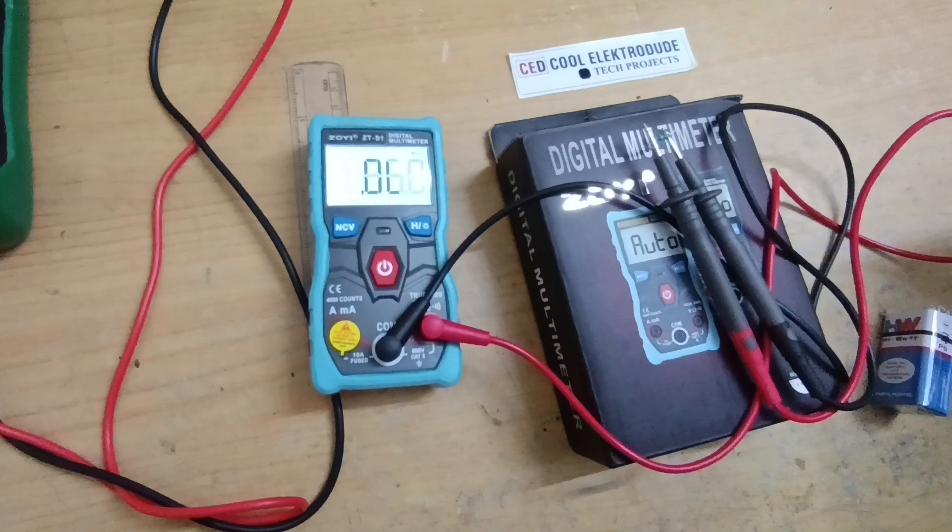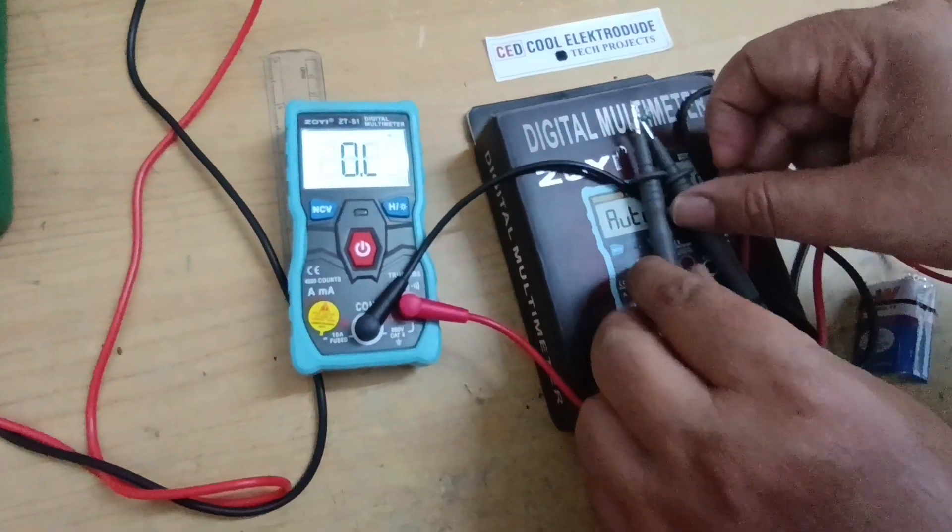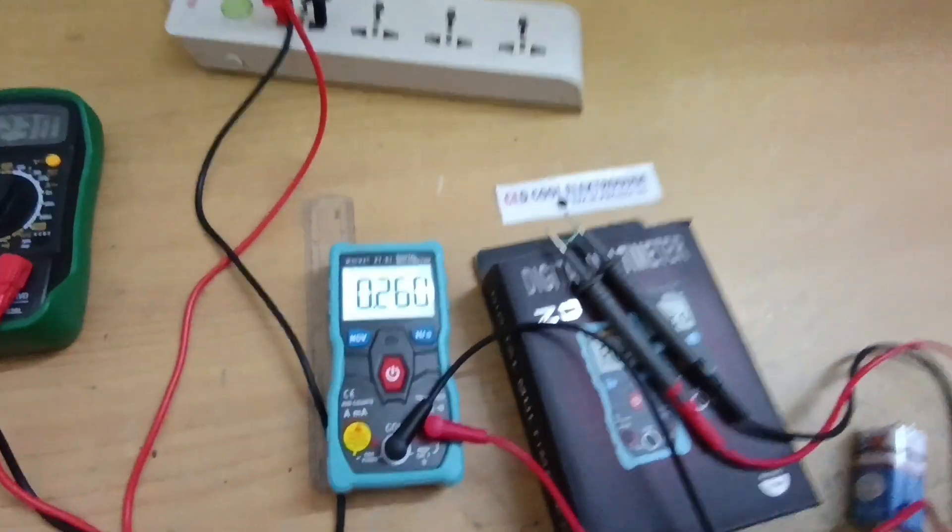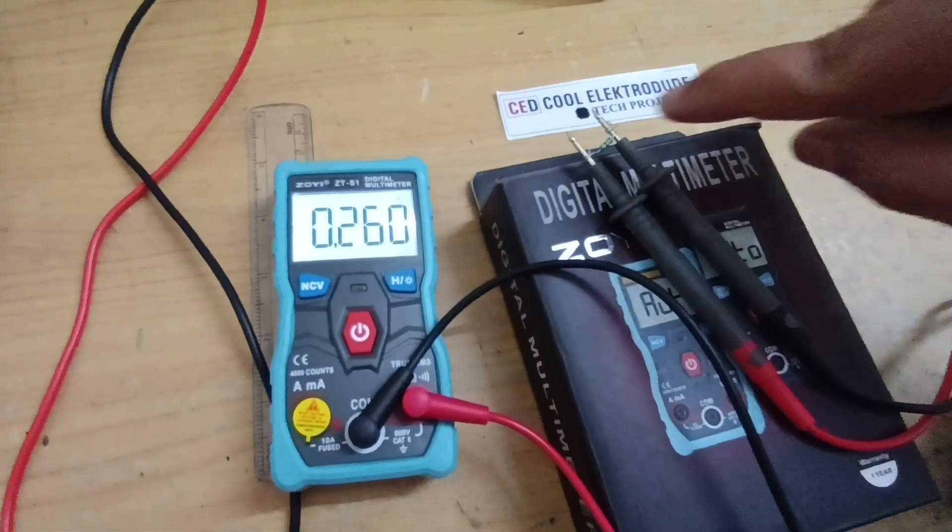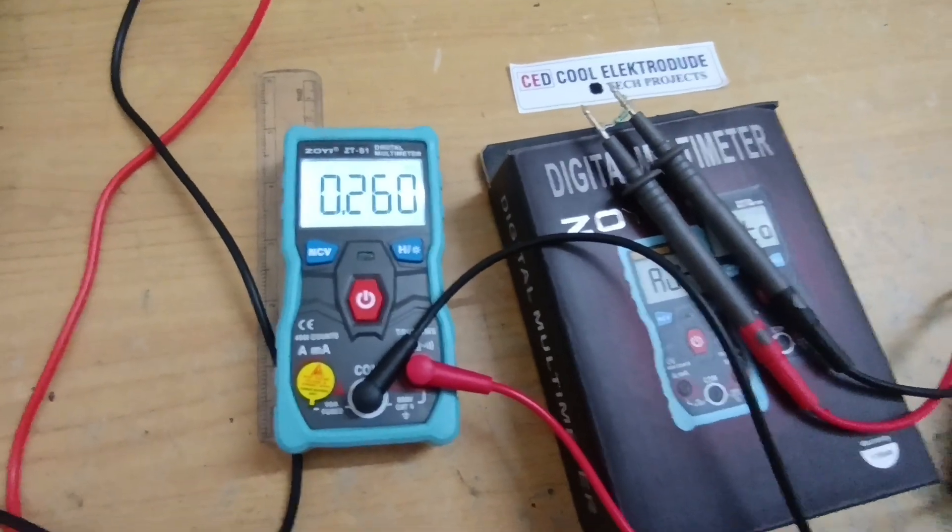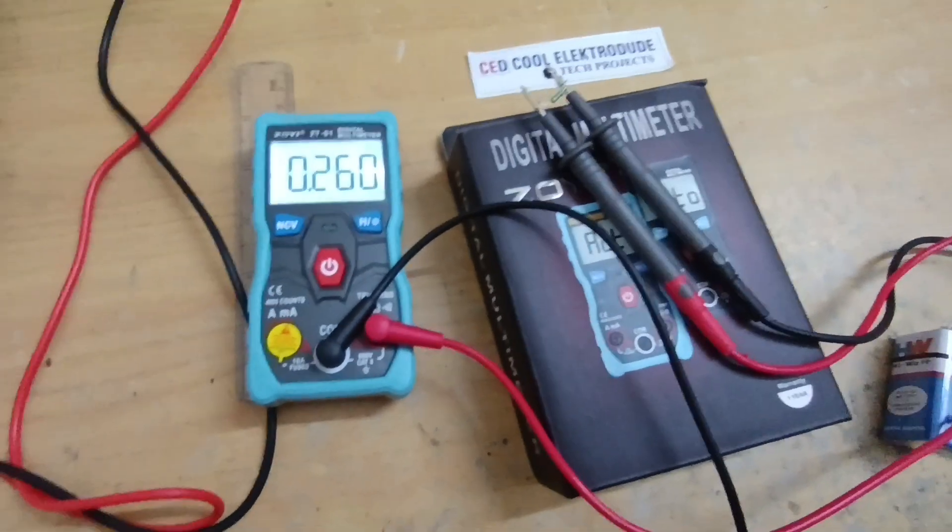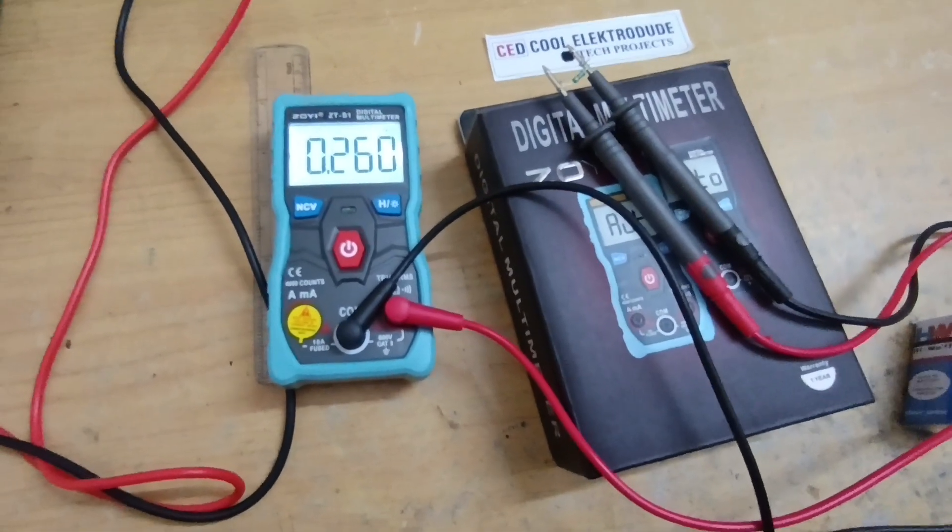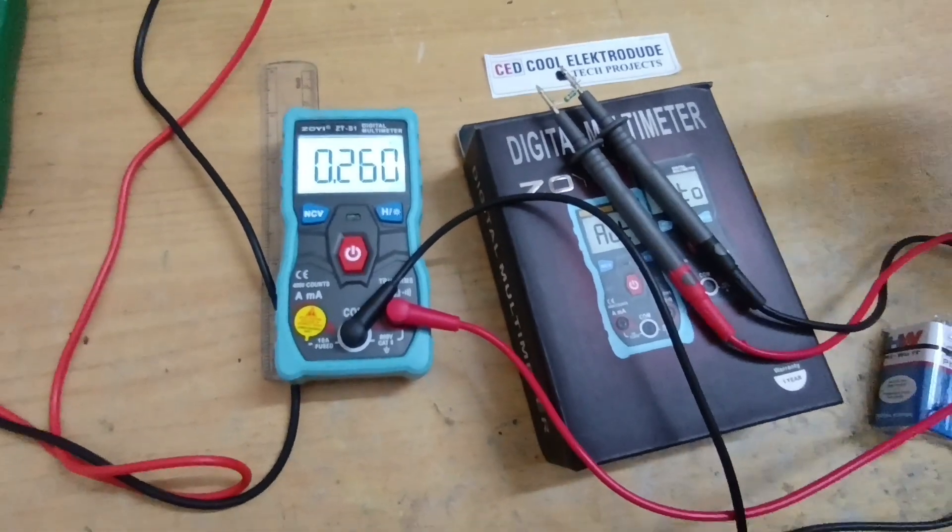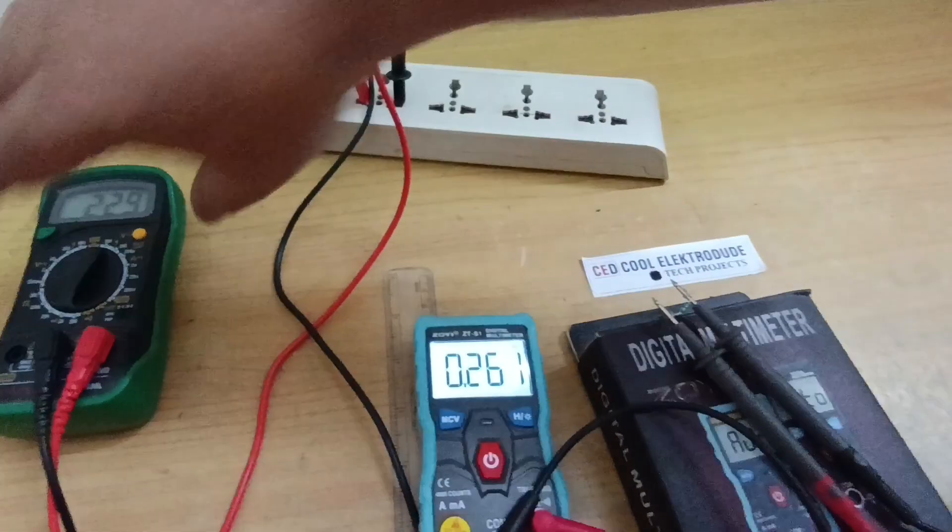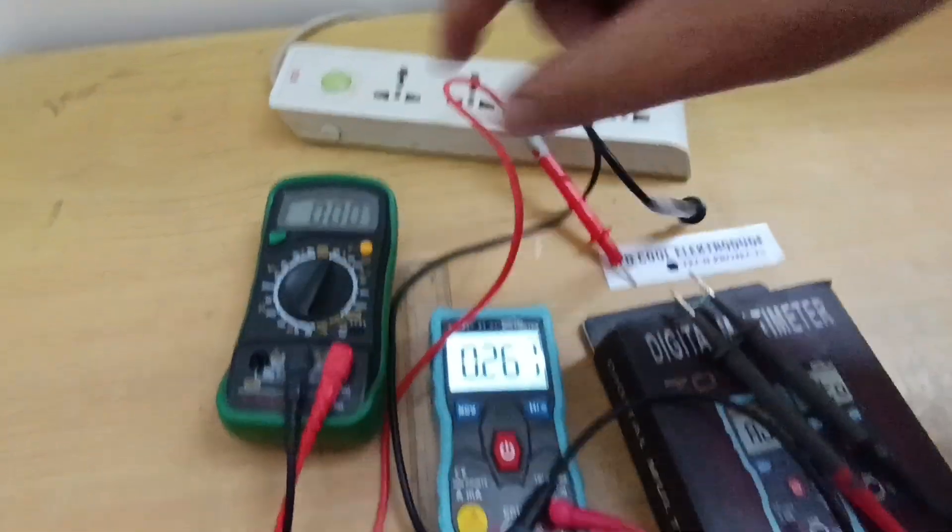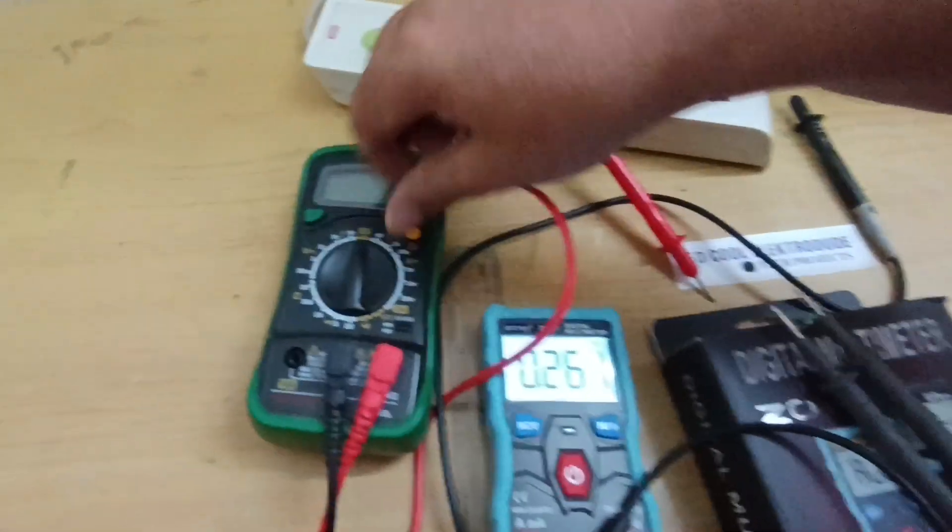I have connected the resistance like this. Now it is connected to the resistance between the two probes. I have connected it this way so that my body resistance doesn't add to the resistor value. It has tolerance, so it is showing 260 ohms instead of 270 ohms. Now I will connect to another meter to compare the accuracy.